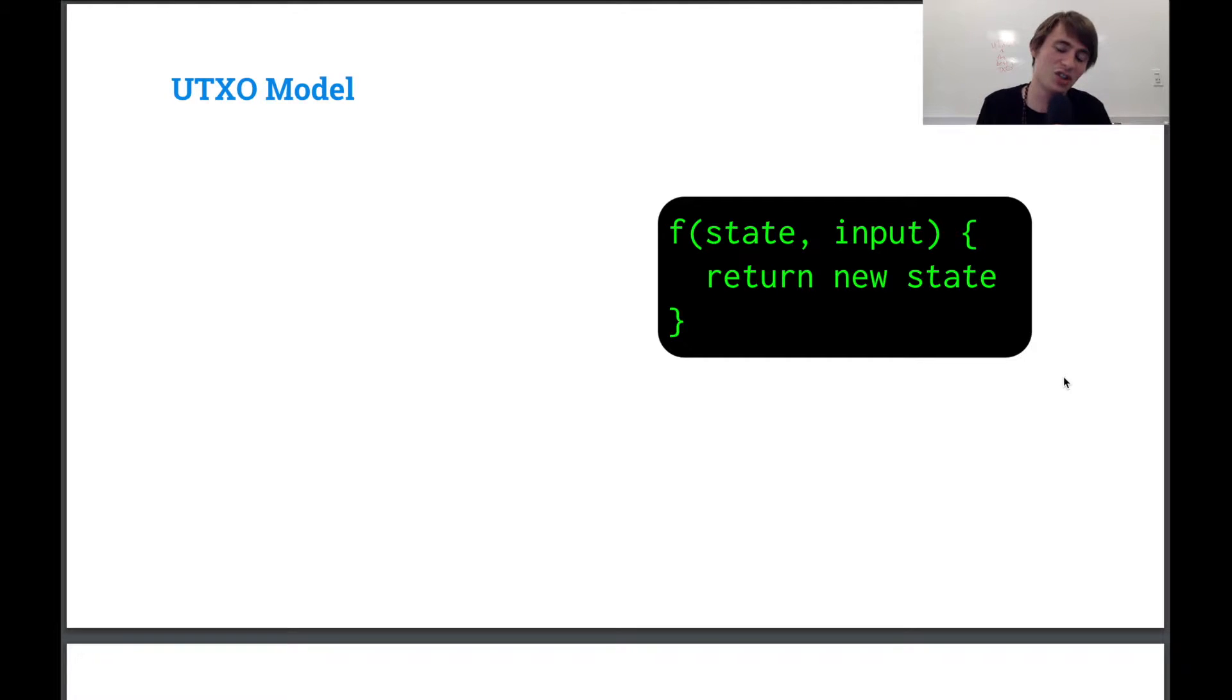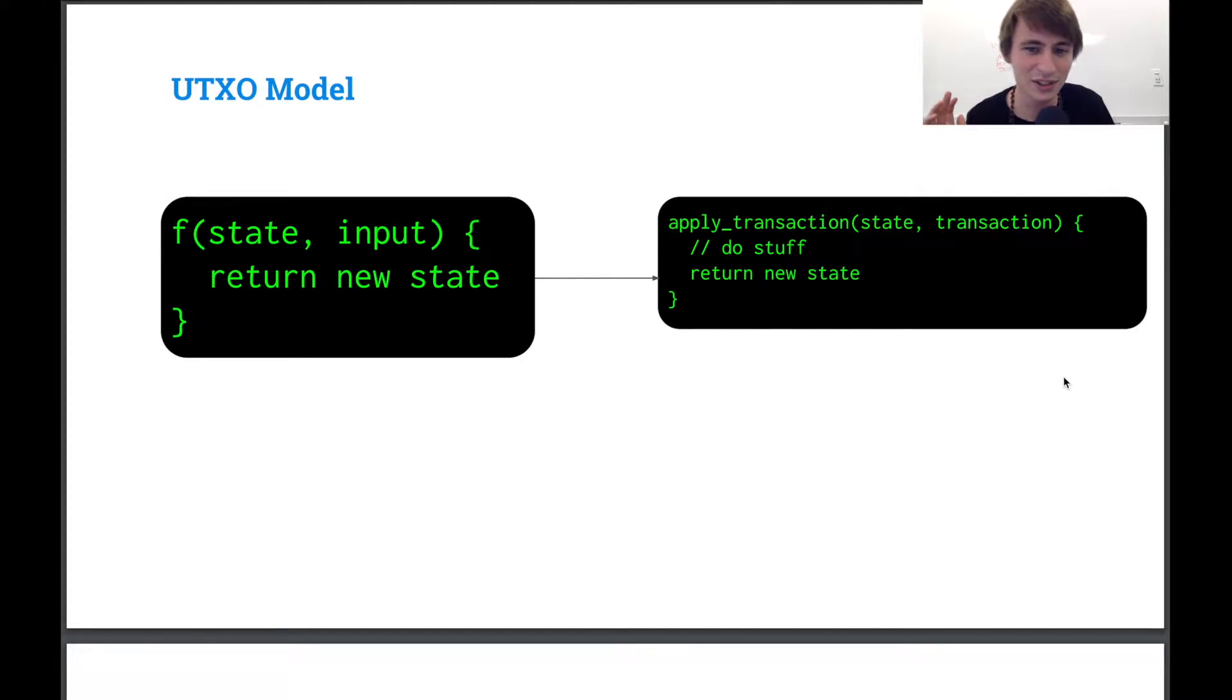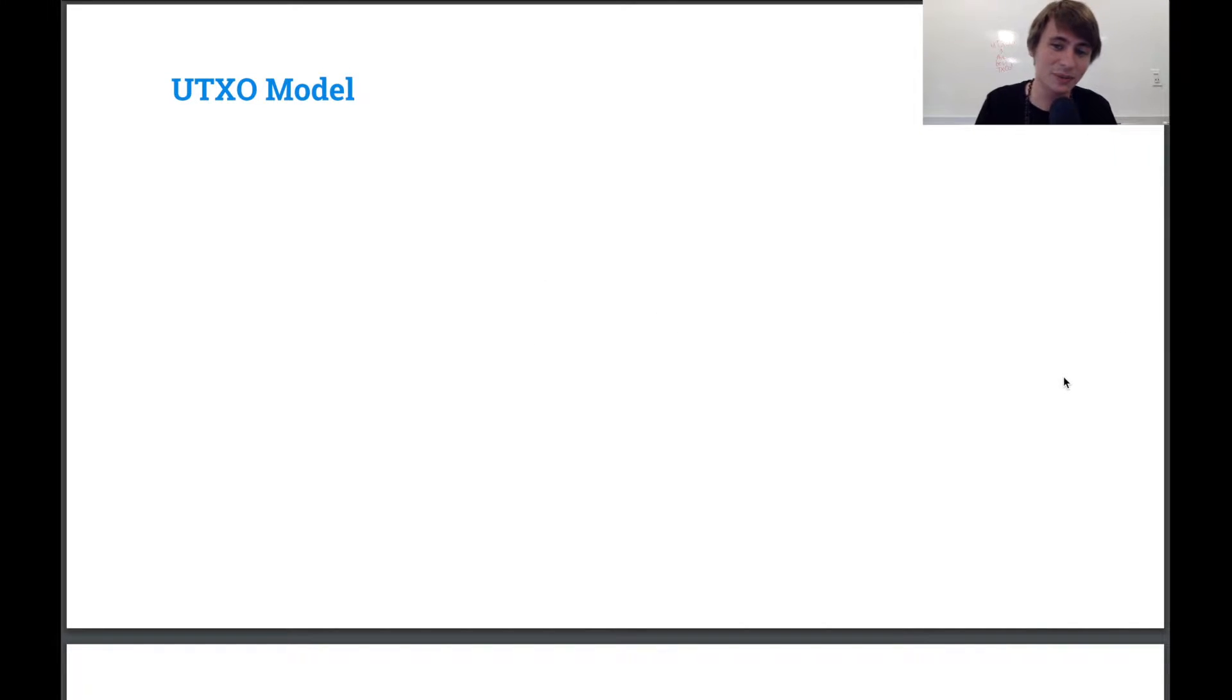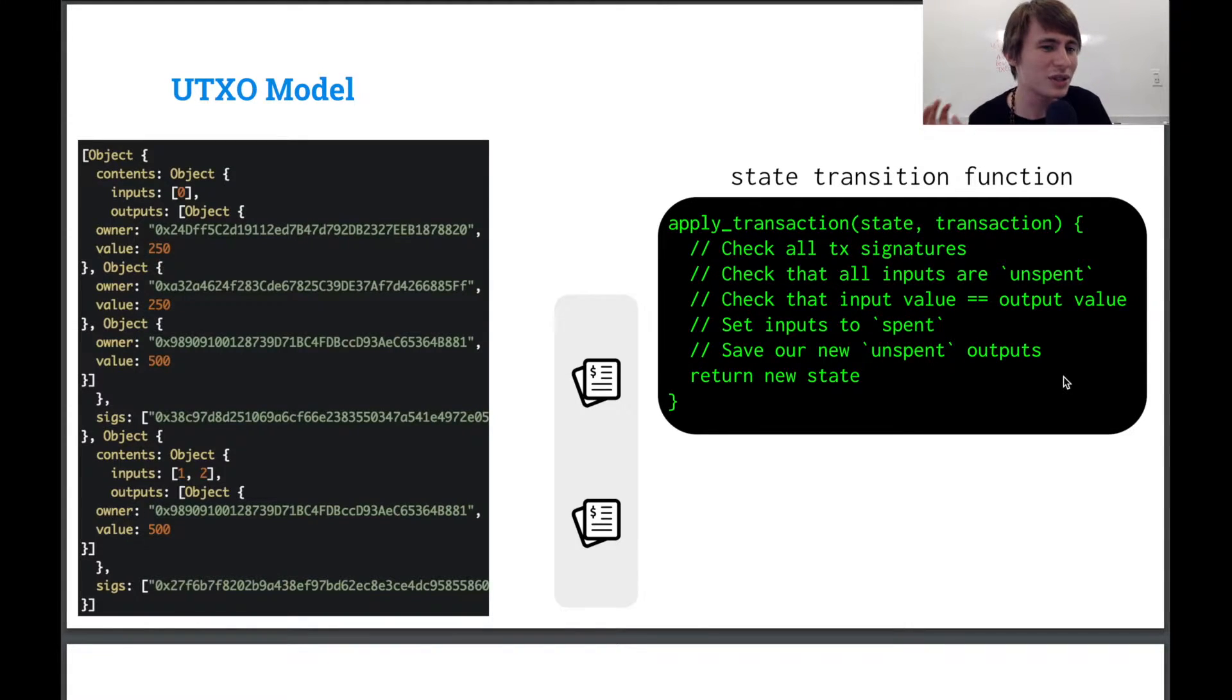So the general format is the same, of course. Once again, we have our state and our state transition function, and we can represent anything with that, so why not represent UTXOs in this way? So we have our apply transaction function, and we're going to look at what is the kind of difference. So how are these transactions structured?